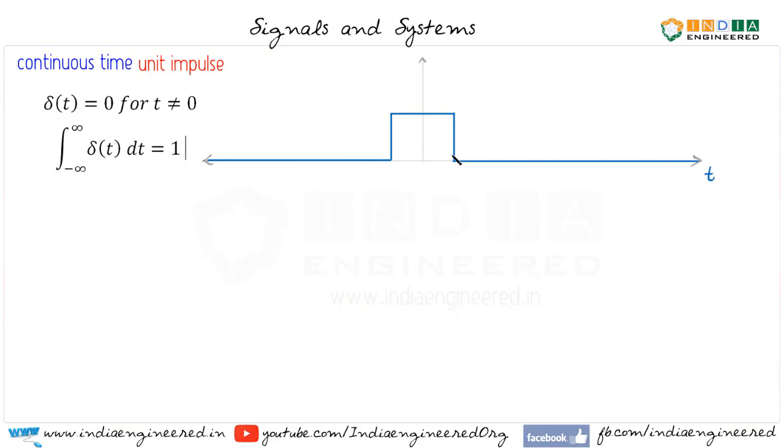Now we will go ahead and see how we get to this conclusion here. To start with, let's consider this signal here. Let's say this signal is x(t). Remember, this is not our unit impulse signal. Now let's assume that its width is Δ and its height is 1/Δ.